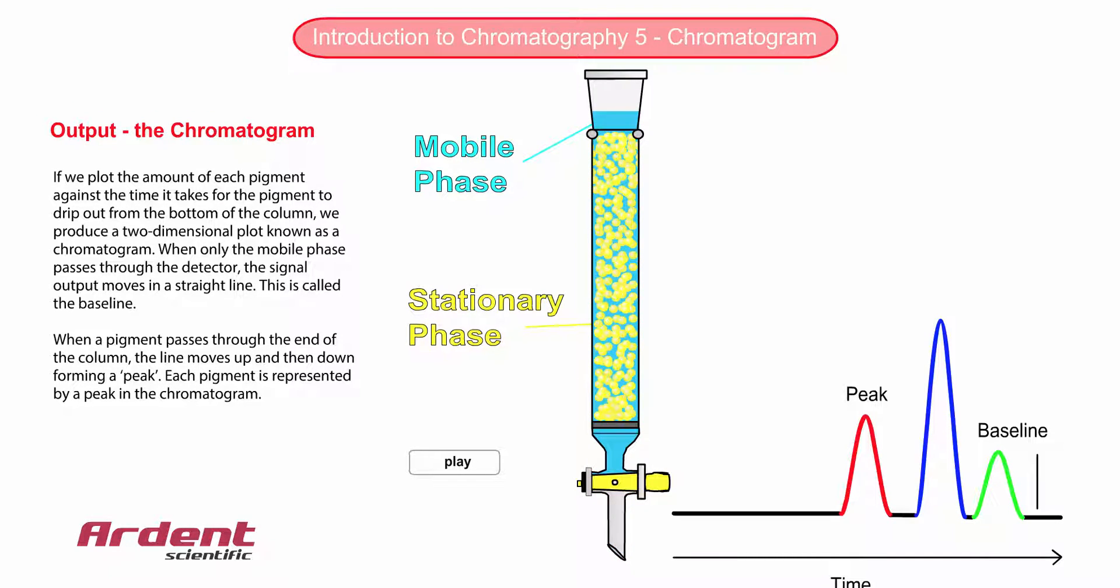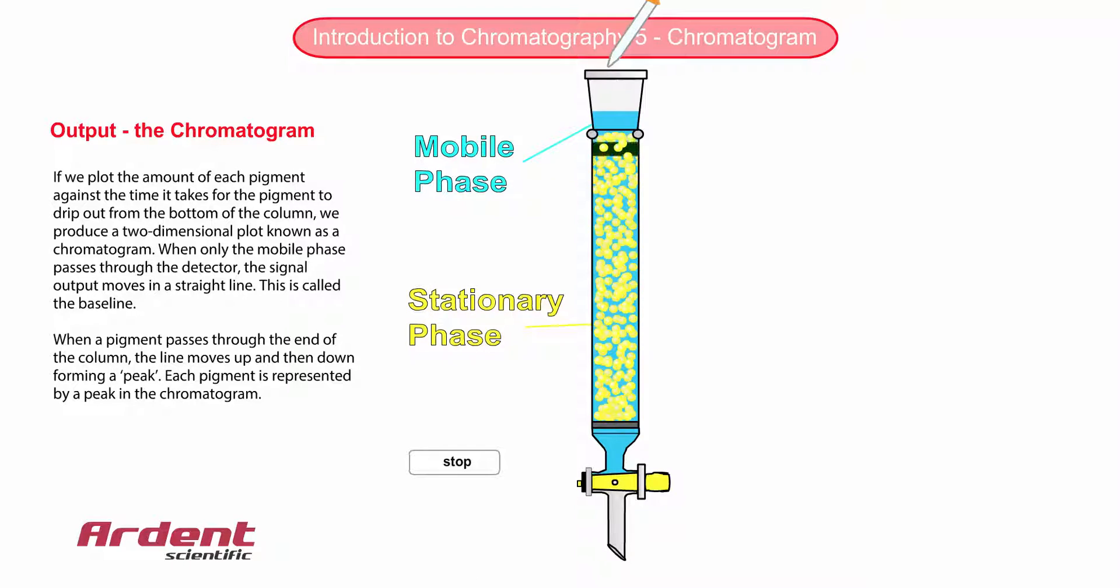The green pigment, on the other hand, is the last pigment in the chromatogram, and is the most retained by the stationary phase.